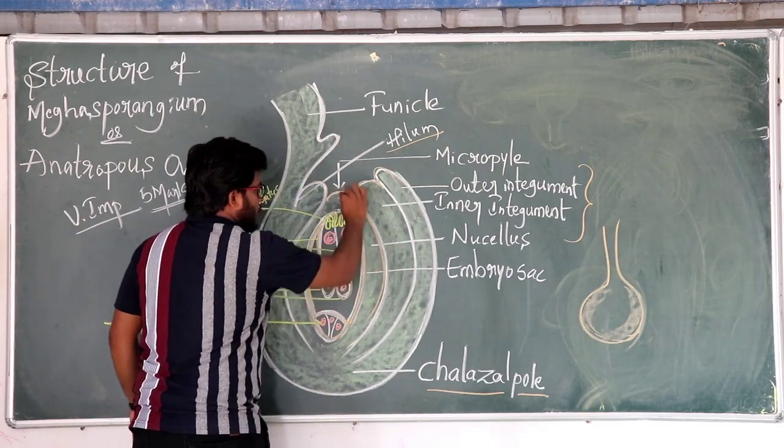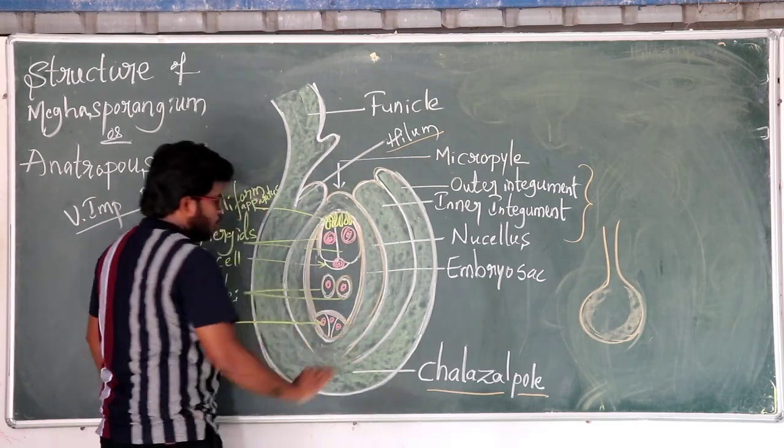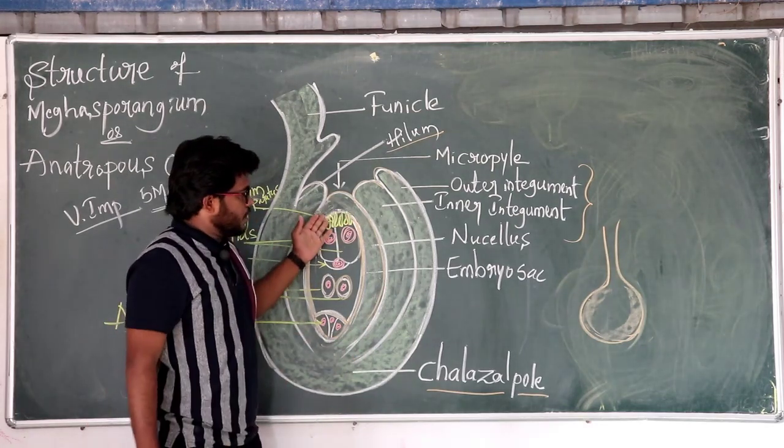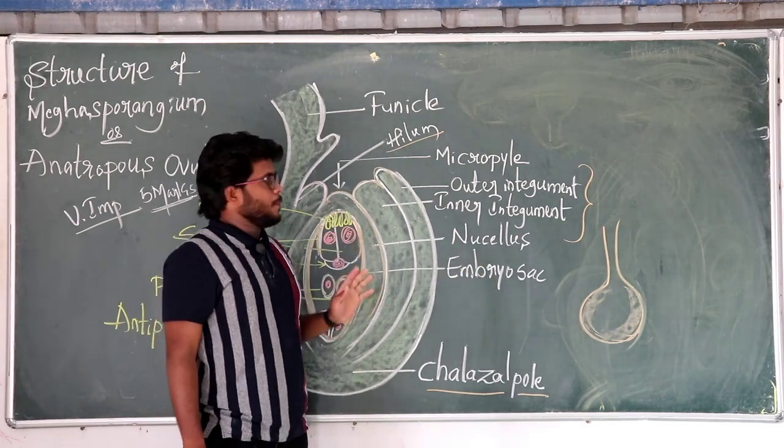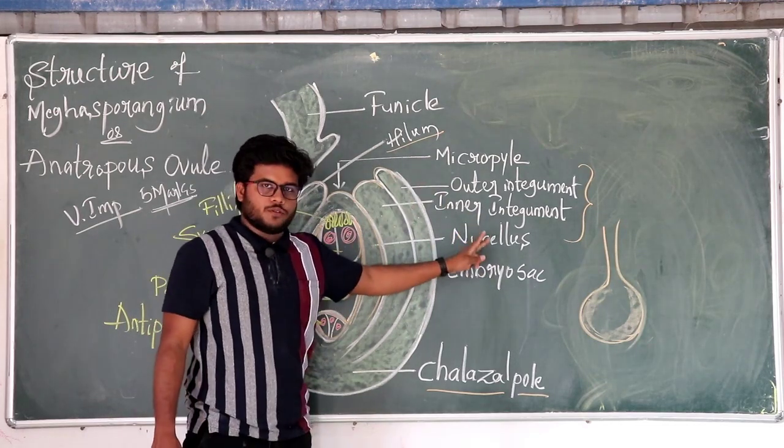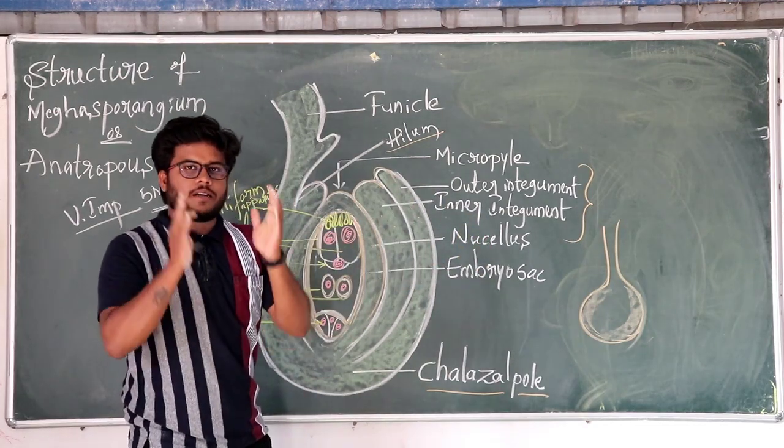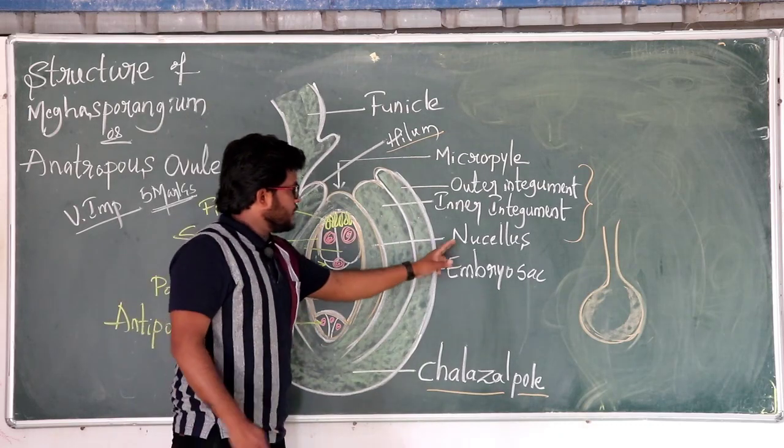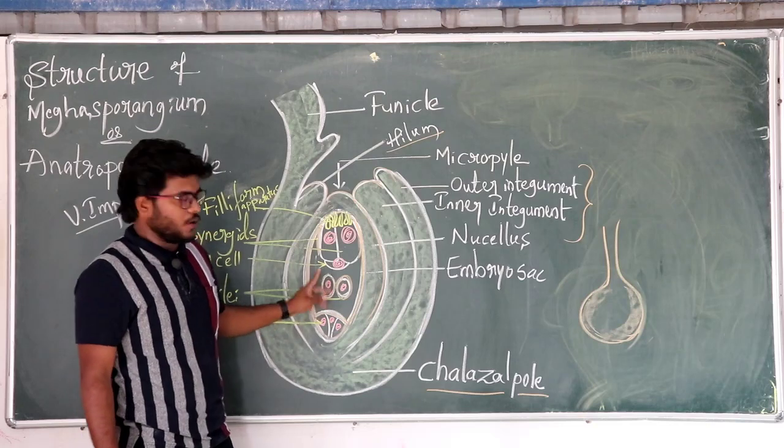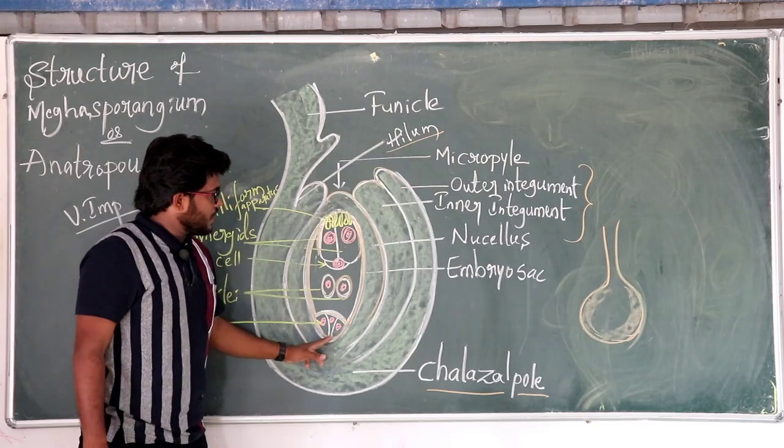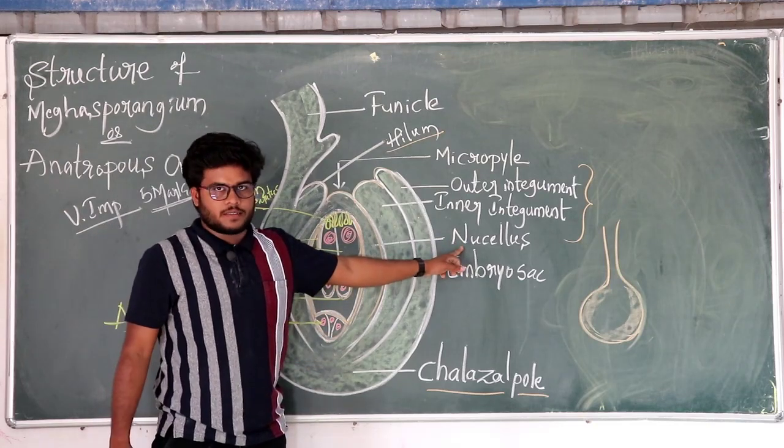Inside, inner to the inner integument, there is a structure of cells called as the nucellus. These cells of the nucellus have abundant reserve food and hence, these are helpful for the nourished embryo sac. So embryo sac is present in the nucellus.